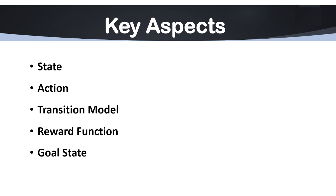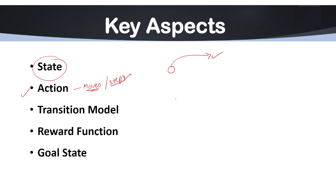The next key aspect is action. Actions in state space representation are the moves or steps that an AI agent can take to transition from one state to another. As we discussed, actions determine the path from one state to another — they represent the connection between one state and the next.